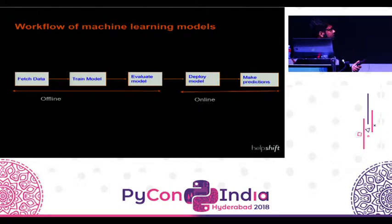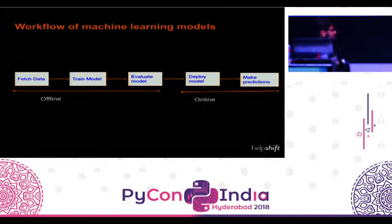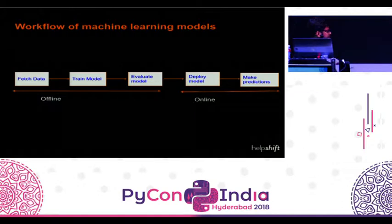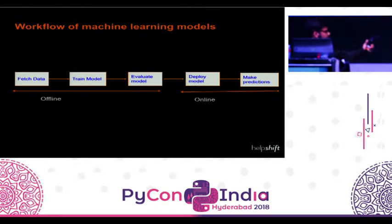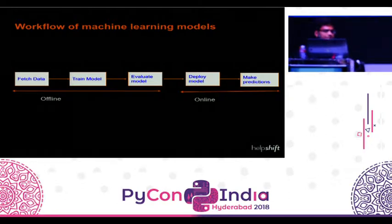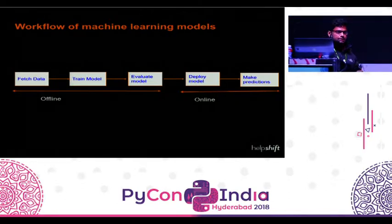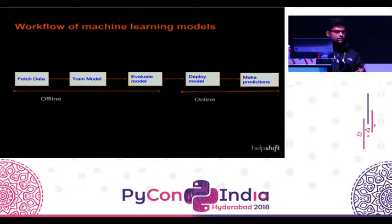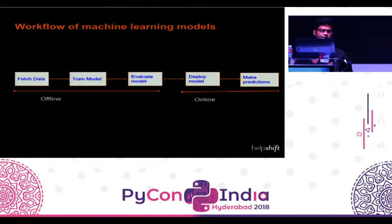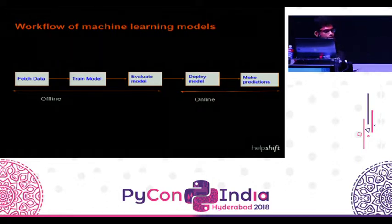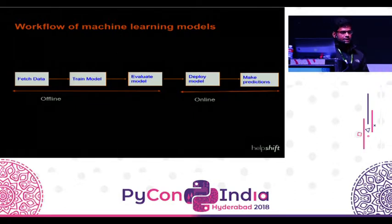The general workflow of machine learning models can be divided into two parts: offline and online. In the offline part, you train models — you fetch data, train, and evaluate using different algorithms with different hyperparameters. At the end, you pick the best-performing model for deployment. In the online part, you use that deployed model to serve incoming requests in production.